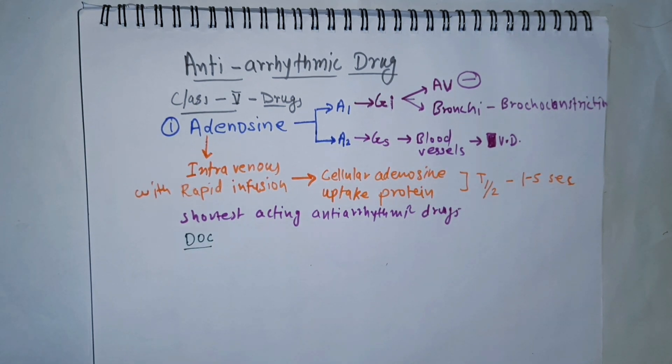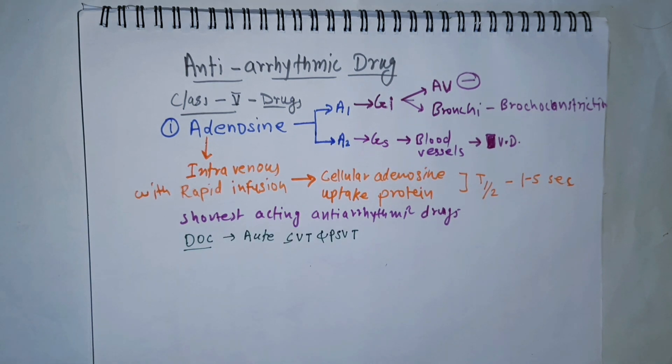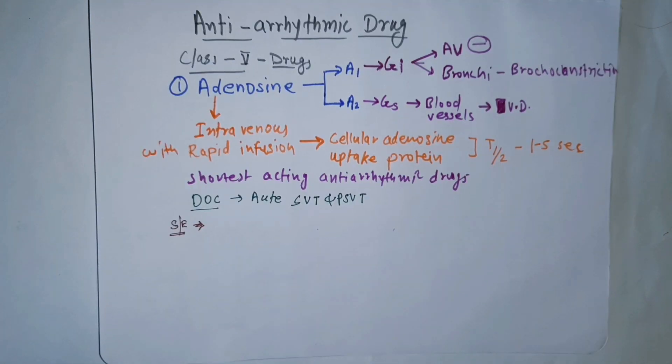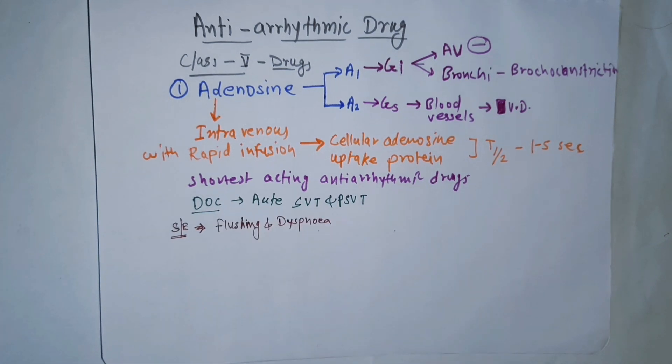Therefore, adenosine is the drug of choice for acute attacks of SVT and PSVT. The most common side effects are flushing and dyspnea.